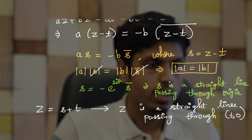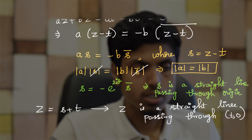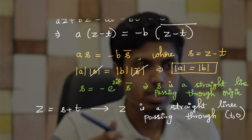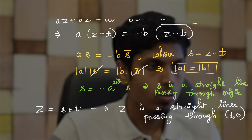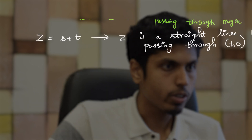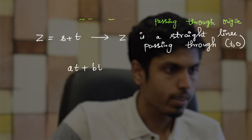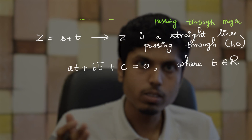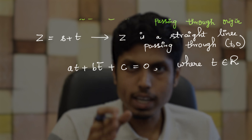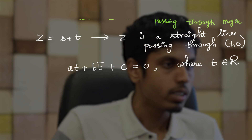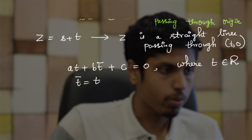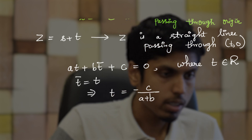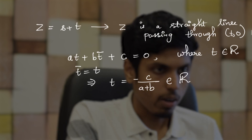This is also a sufficient condition, and we obtained |a| = |b| as a necessary condition. We assumed the line intersects the x-axis at (t, 0). Now let's prove that such a point actually exists. For existence, we need at + bt̄ + c = 0 where t is real. Since t is real, t̄ = t, giving t = −c/(a + b). For this to exist, c/(a + b) must be a real number.